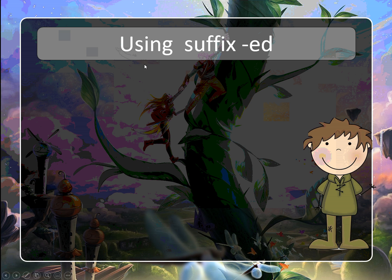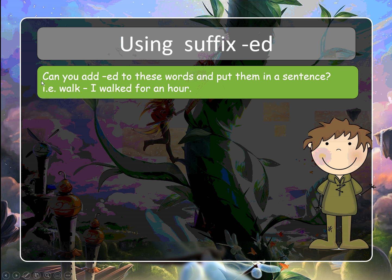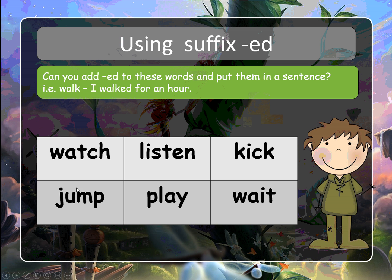Today Jack's got a new challenge. He wants you to have a go at using the suffix ED to change some verbs. He's asking: can you add ED to the words below and put them in a sentence? For example, if your word was walk — 'I walked for an hour.' Here are the words he wants you to try: watch, listen, kick, jump, play, and wait. All of these are in the present tense and he wants you to turn them into sentences using the past tense. Grown-ups, pause the video and when you've done that, start again and we'll get going.